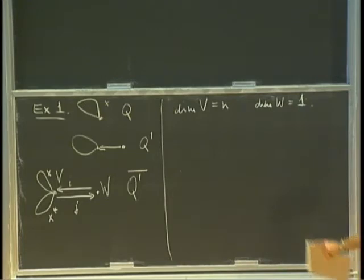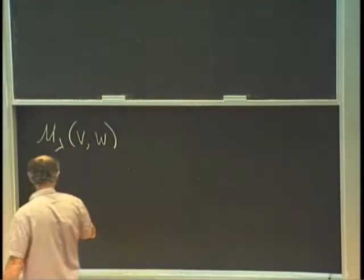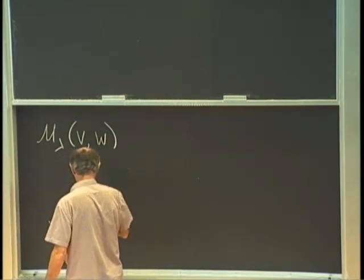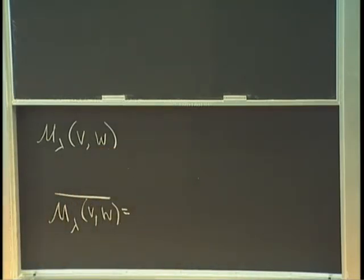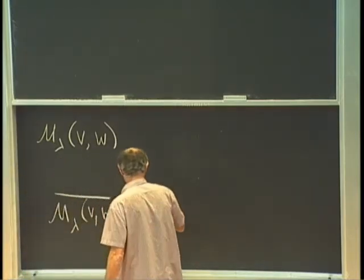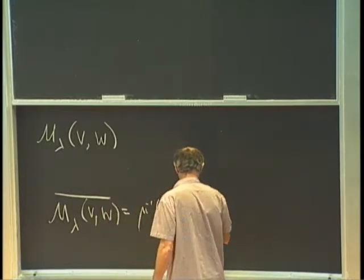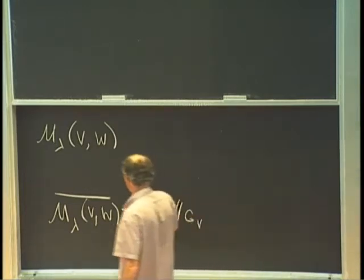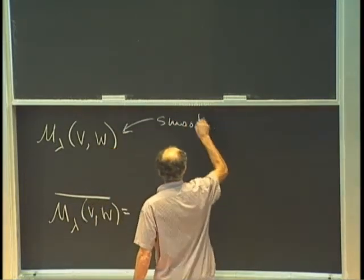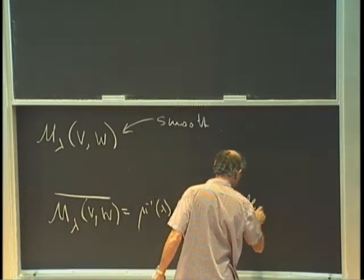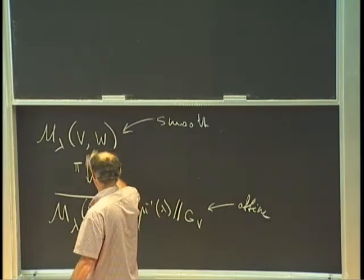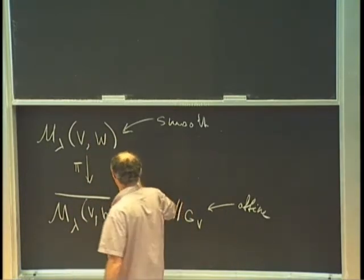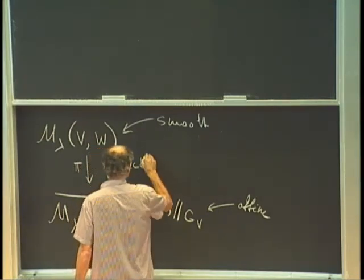I remind you that I defined this Nakajima variety M_lambda(V,W), but I also have a variety with a bar on top — same definition except that chi becomes zero, so it's just a categorical quotient. This is the preimage of lambda under the double-slash by G_V without any chi in it. The bar variety is affine and possibly singular; the non-bar variety is smooth. They are related by a projective morphism pi, which comes automatically whenever you have a GIT quotient and a categorical quotient.